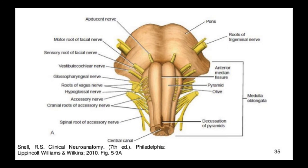The olive is a round swelling. The reason it swells is because it contains the olivary nucleus inside it. Moving more posterolaterally, we have the peduncles — specifically the cerebellar peduncles. The cerebellum is positioned posteriorly and needs something for attachment. So we have cerebellar peduncles connecting the cerebellum to the medulla; because the medulla is the most inferior part of the brainstem, these are called the inferior cerebellar peduncles.